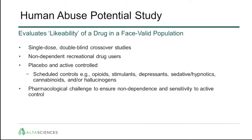The Human Abuse Potential Study evaluates the likability of a drug in a face-valid population, and these are pivotal studies that position drugs into their respective scheduling class based on their abuse potential profile. These are single-dose, double-blind, crossover studies conducted in non-dependent recreational drug users. Both a placebo and an active control with known abuse potential are used, and a pharmacological challenge ensures that subjects are non-dependent on the recreational drug and sensitive to the active control.